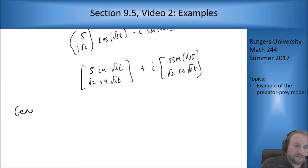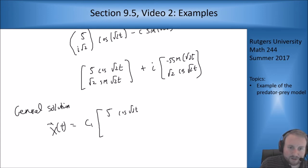So then my general solution is x vector of t is going to be c1 [5 cosine root 2t; root 2 sine of root 2t] plus c2 [negative 5 sine of root 2t; root 2 cosine of root 2t].